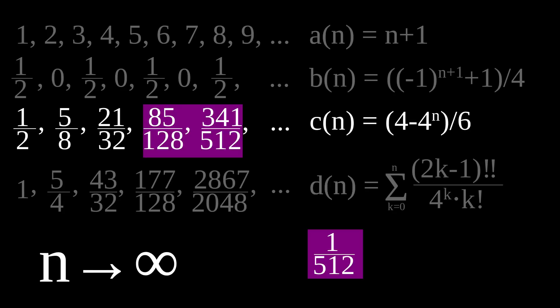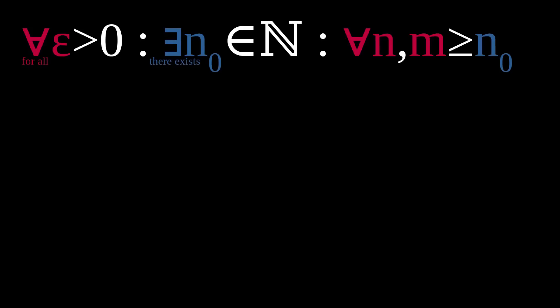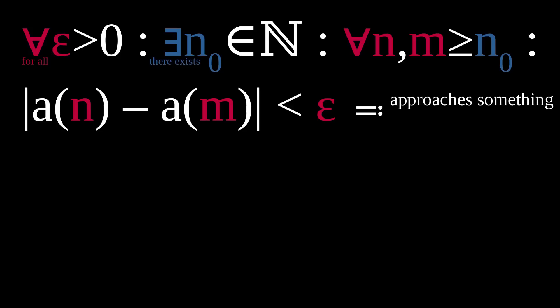Take a deep breath and enter epsilon. If for any distance epsilon you throw at me, I can provide a benchmark n0 such that for any numbers n and m above that benchmark, the distance of the sequence evaluated at n and m is smaller than epsilon, then I have proven that the sequence approaches something—that when you go far enough out along the sequence, all distances become arbitrarily small. These sequences are called Cauchy sequences.